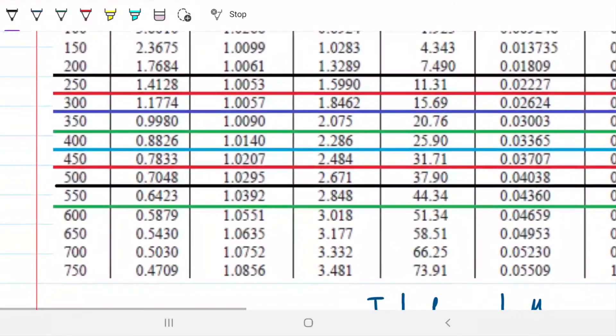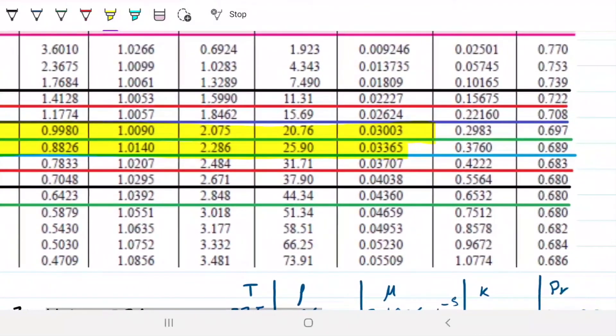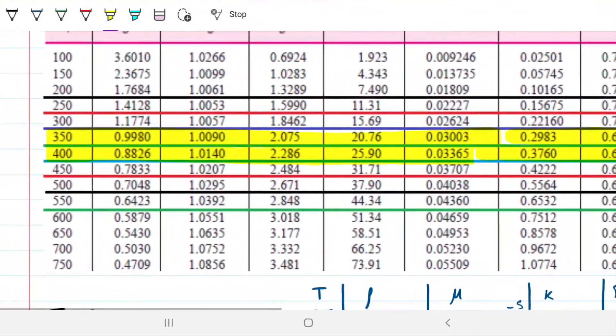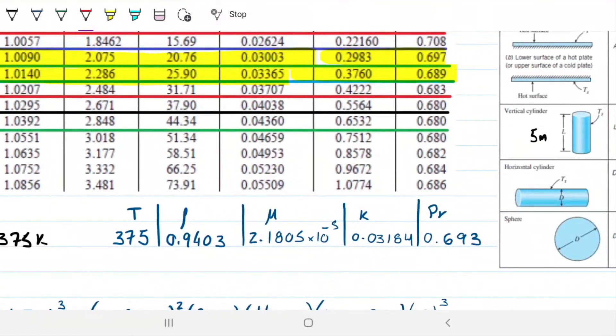And once we do that, we can go to the table I just showed you so that we can find what is the appropriate correlation to be used in this problem. Okay, so the first thing I did, like I said, 300 and 450 divided by 2 gave me 375. I'm going to take properties at this temperature here. And in this case, that's straightforward because it's going to be between my 400 and my 350.